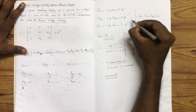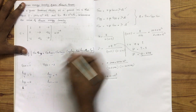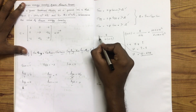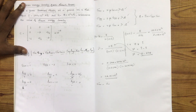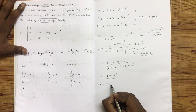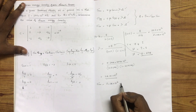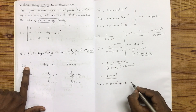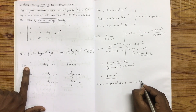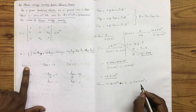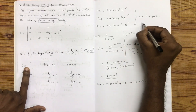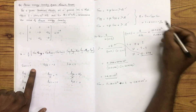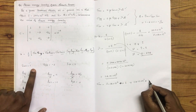For sigma xx: 2 into mu (equal to G) into εxx plus lambda into delta. Epsilon xx equals 1, and delta equals εxx plus εyy plus εzz equals 1 minus 3 plus 0, which equals minus 2 (times 10⁻³). The computed numerical value involves 10 raise to the relevant powers.